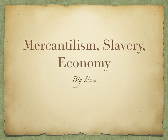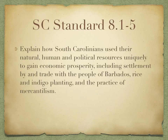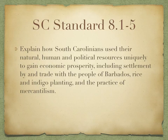Today we're going to talk about mercantilism, slavery, and the economy in South Carolina. We are dealing with Social Studies Standard 8-1.5, which says: Explain how South Carolinians use their natural, human, and political resources uniquely to gain economic prosperity, including settlement by and trade with the people of Barbados, rice and indigo planting, and the practice of mercantilism.